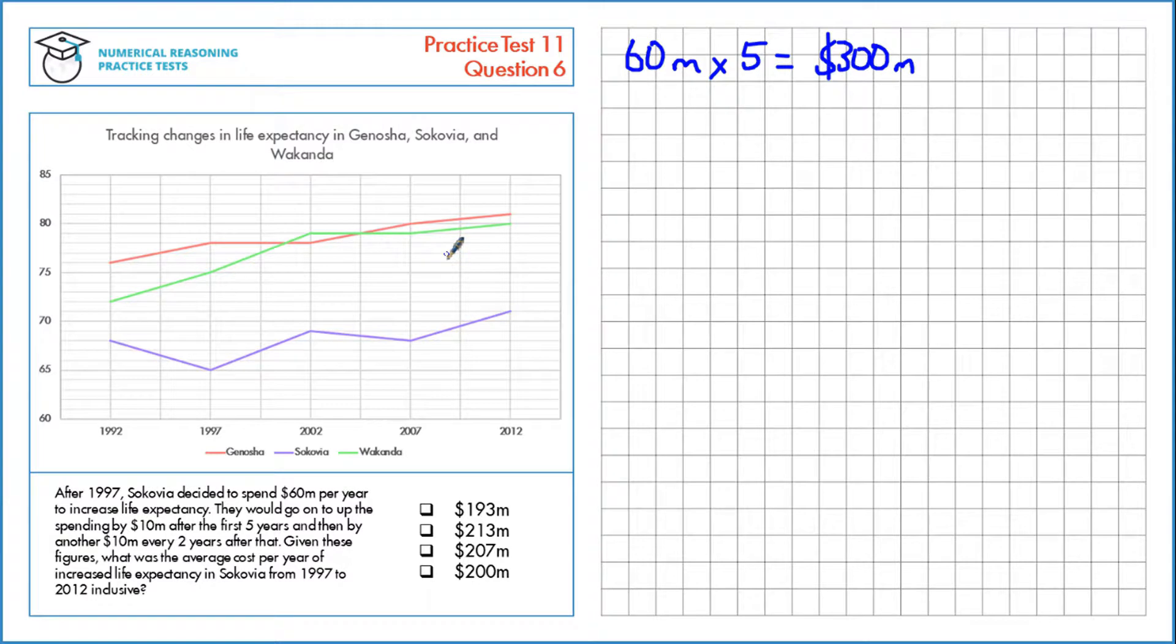Now we need to calculate the spending from 2003 onwards. Initially we have to increase the spending by $10 million per year since the first 5 years have already gone, and that lasts for 2 years.